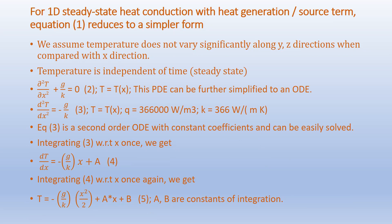For 1D steady-state heat conduction with heat generation, the general equation reduces to a simpler form. We assume temperature does not vary significantly along y or z compared to x, and temperature is independent of time (steady-state). Accordingly, the equation becomes: ∂²T/∂x² + G/K = 0, which is in fact an ODE: d²T/dx² = -G/K, where G = 366,000 W/m³ and K = 366 W/m·K.